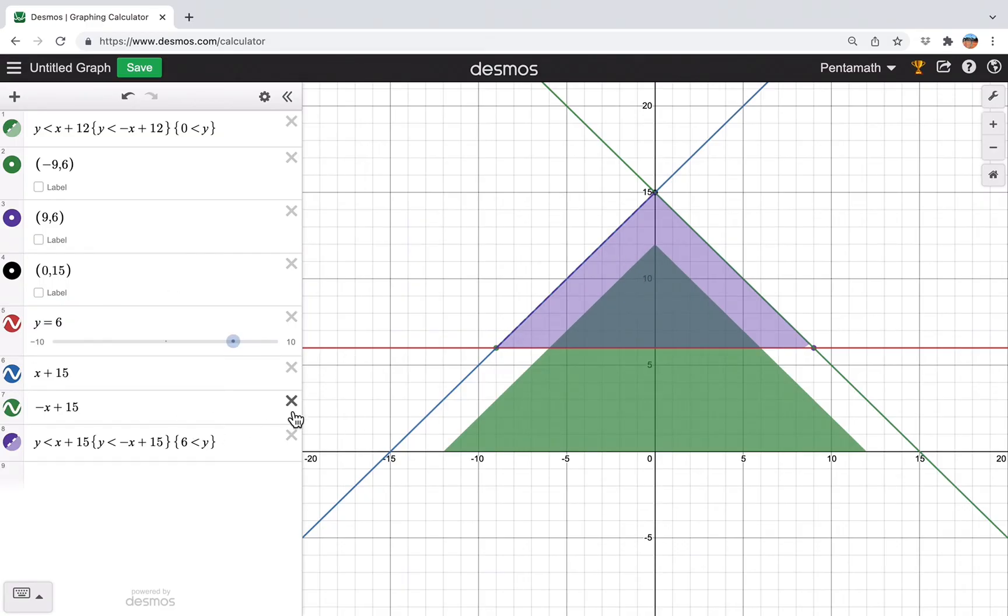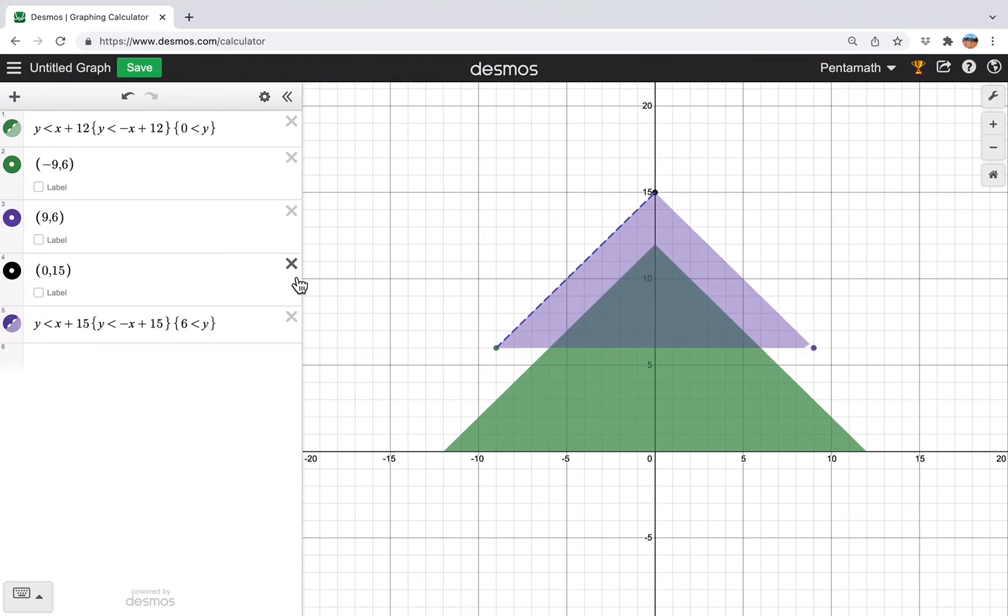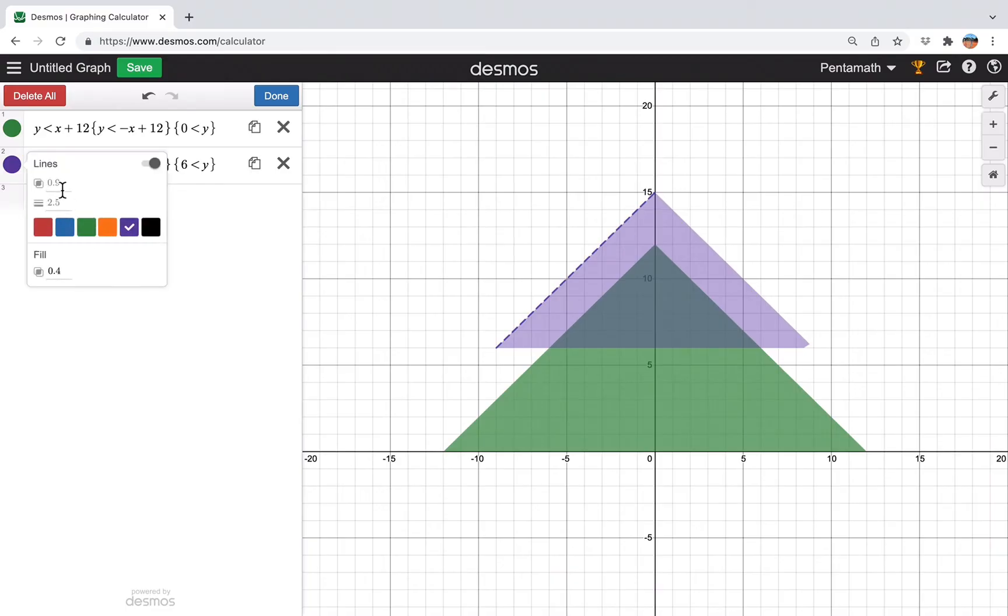And then again, now we can just get rid of everything else now that we have our triangle. And we'll get rid of that and then change the style. So we'll make that 0, then we'll make it green and we'll make the fill slightly darker.